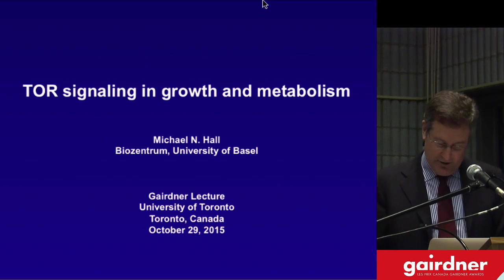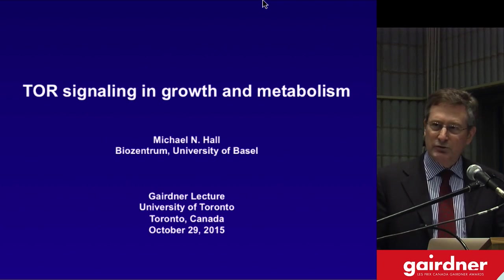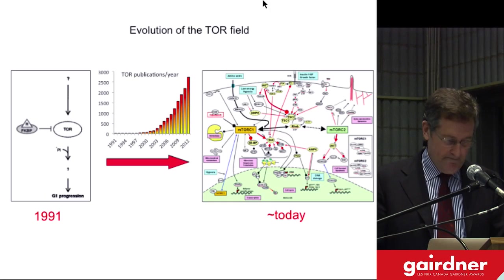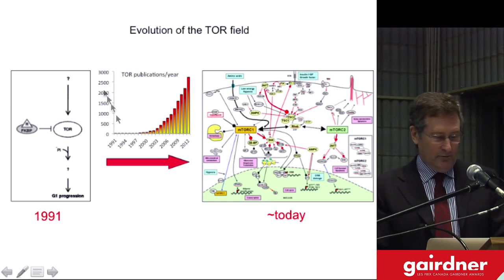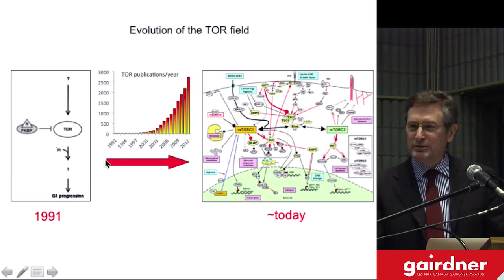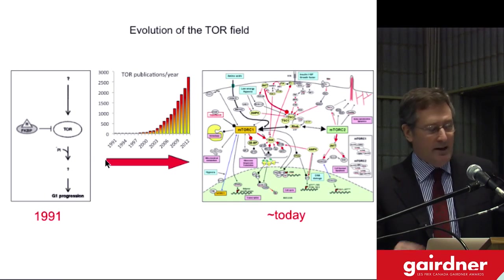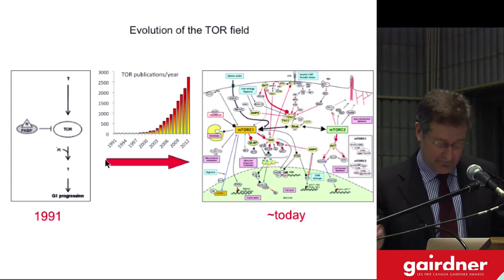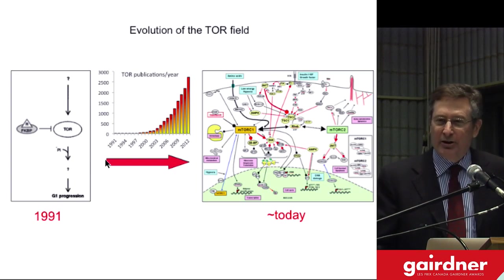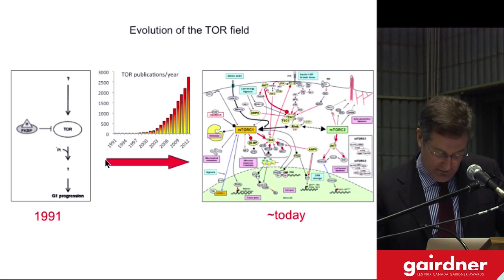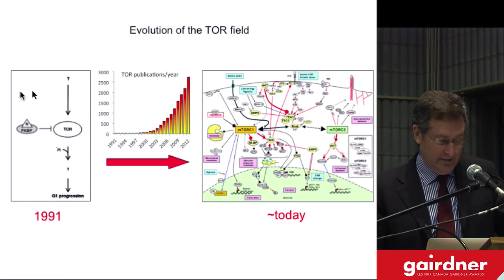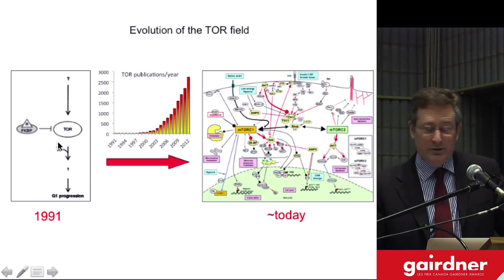The first slide I'd like to show makes the point — gives you a broad view of the TOR signaling pathway. This over here is the very first ever model of TOR signaling published, shortly after discovering TOR in 1991. I have to say I'm actually embarrassed I published this model. I think of it more as a Gary Larson cartoon than a scientific model. There are more question marks than actual useful information, and much of the information there is wrong. Essentially, all this model says is TOR exists and nothing else.